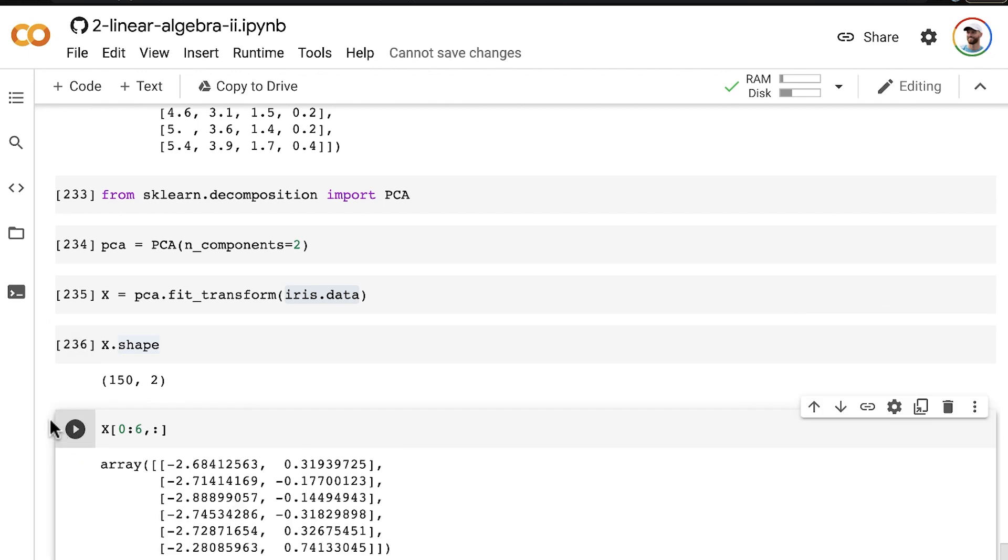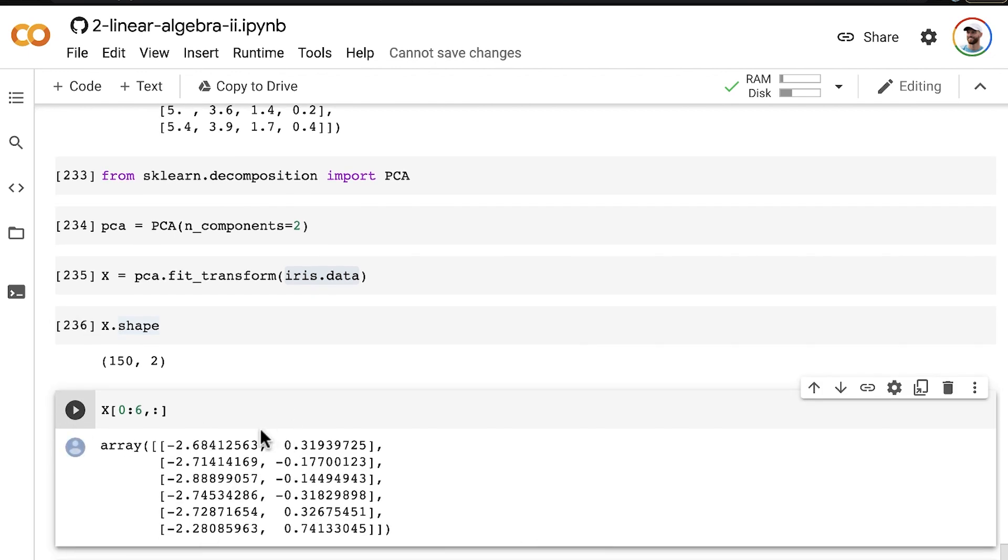So now when we look at that, you can see we have these two values, the first principal component and the second principal component.